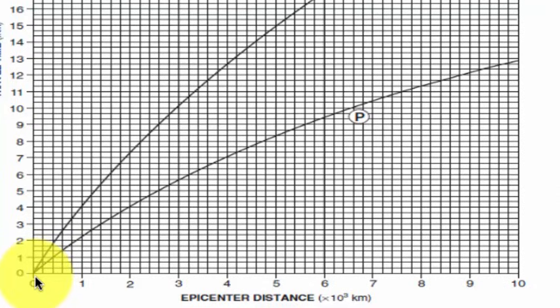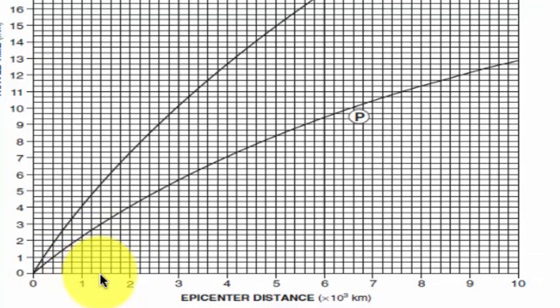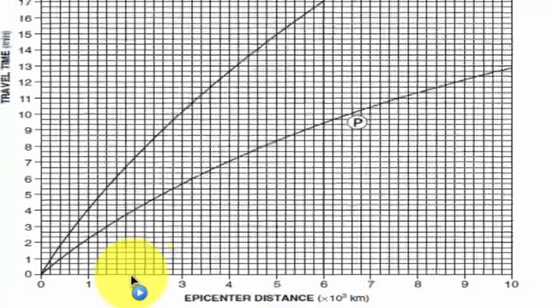So it goes 0 kilometers, 200 kilometers, 400 kilometers, 600 kilometers, 800 kilometers, then 1,000 kilometers. And then it continues on — 1,200, 1,400, 1,600, 1,800, 2,000 kilometers. That's how we read the axes on our graph.